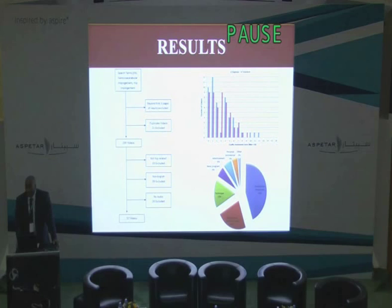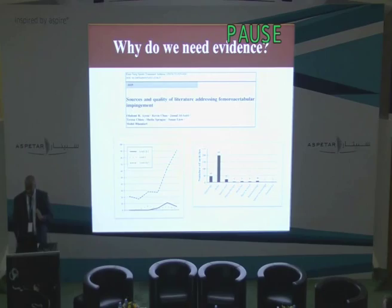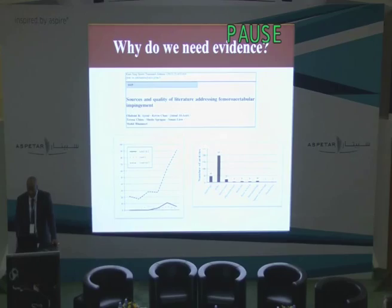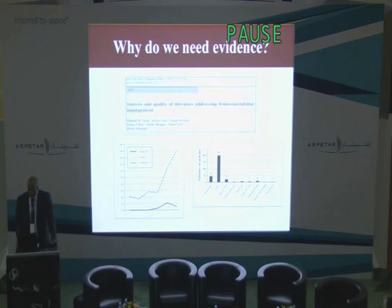Surprisingly, when it comes to who's disseminating the information, about two-thirds are health professionals. So it may look as if patients are getting good information, but in reality, they are not. We've also looked at the sources and quality of information addressing FAI, and we can see a dramatic rise in publications, but again, level 4 and level 5 type evidence, and most of it by orthopedics. So we do need to beef up the evidence and strengthen our approach to provide patients with the best of care.